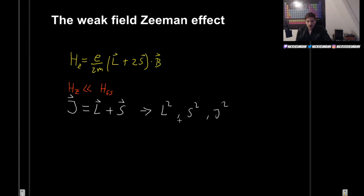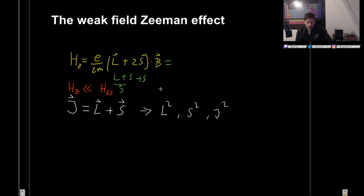Now that we know these are good states, we need to get rid of the bad states, which are L and S. Let's simply rewrite the Hamiltonian. We have L plus S, and then plus S again, so we can replace L plus S by writing J instead.